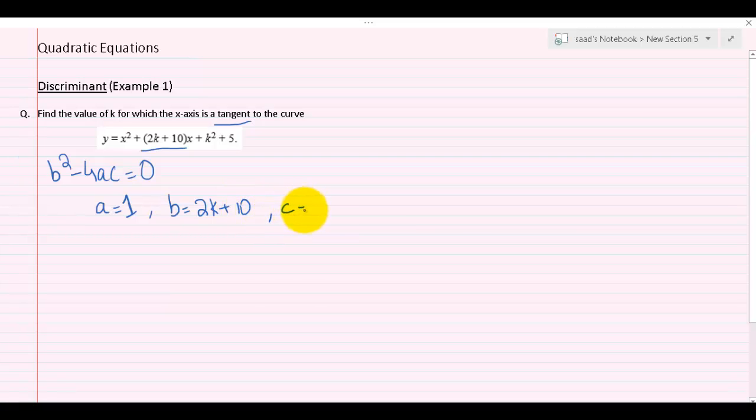c is basically the constant or the terms that have no variable attached. So you can see that the constant in this equation will be k squared plus 5. So k squared plus 5 will be c. Now let's plug them in.